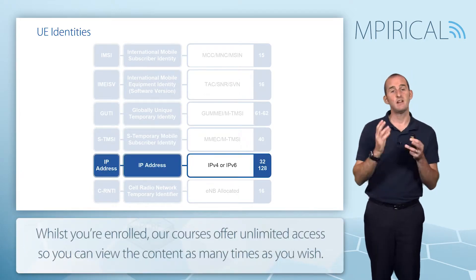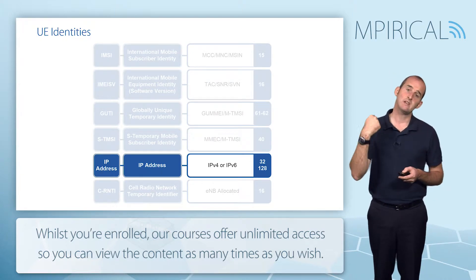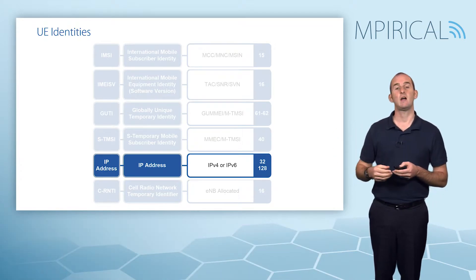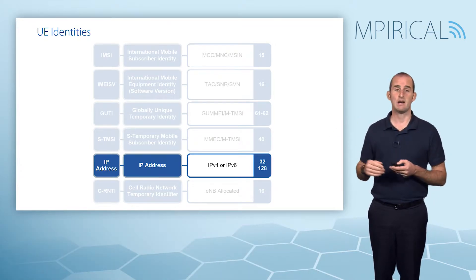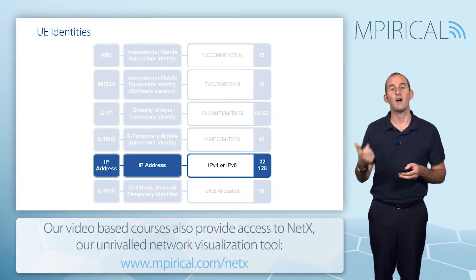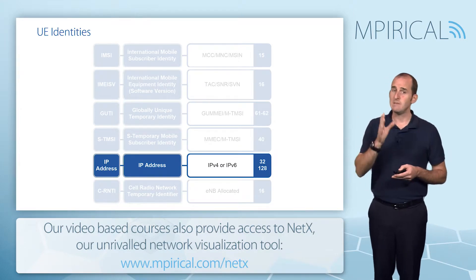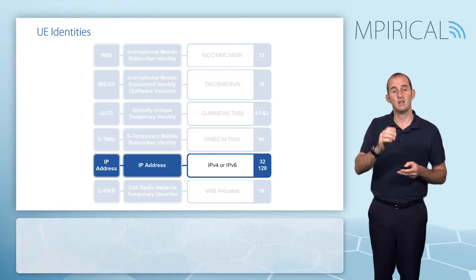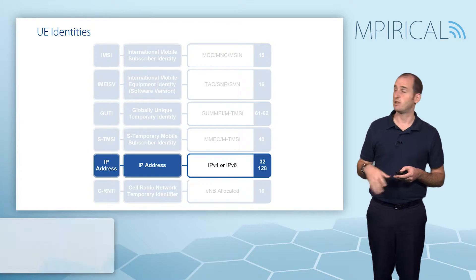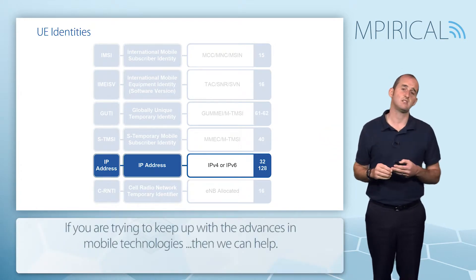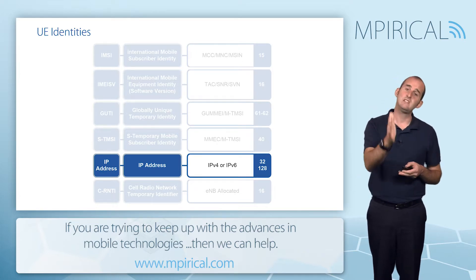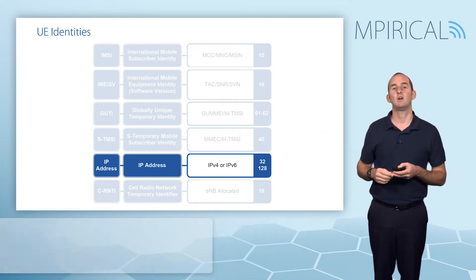The device will eventually receive an IP address. When we connect to a given packet data network, the PDN gateway will provide an IP address relative to that packet data network, allowing the device to function on that particular network. If we connect to different PDNs simultaneously, the device may actually have different IP addresses — they could be IPv4 or IPv6 — so we could have multiple IP addresses relative to each individual PDN we connect to.